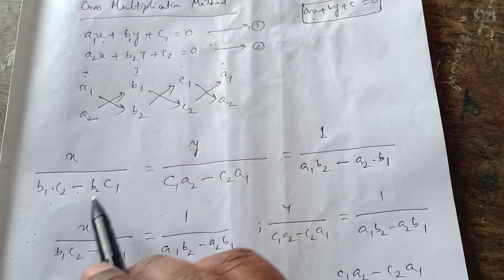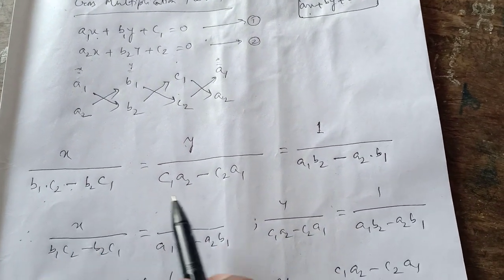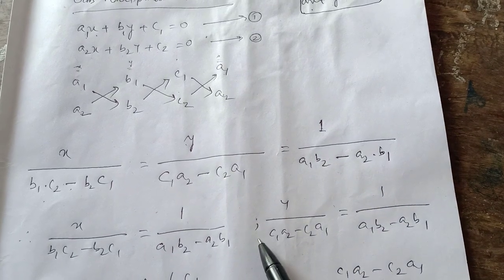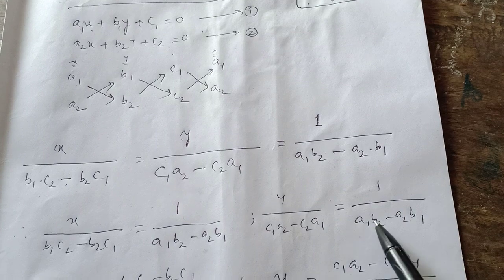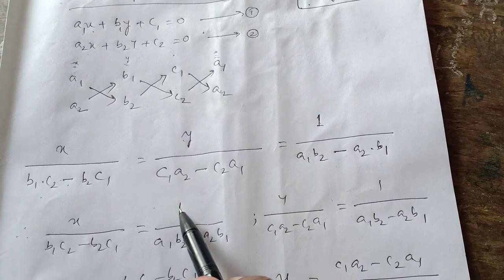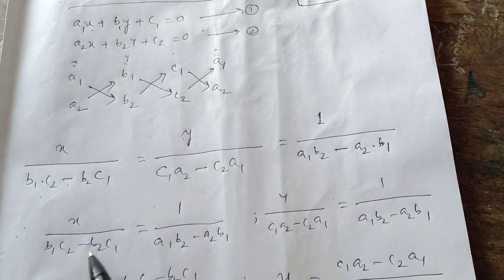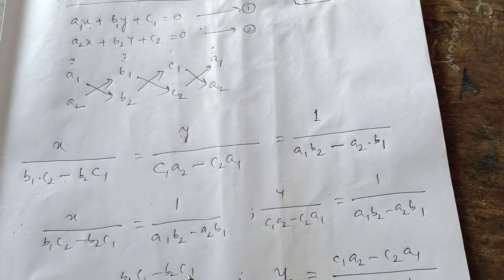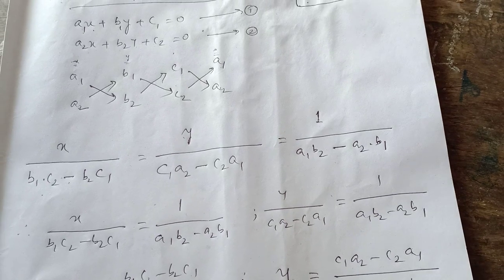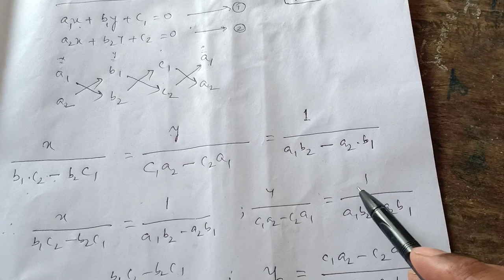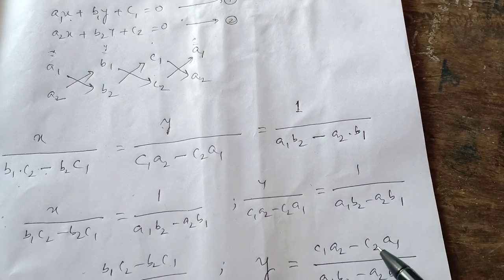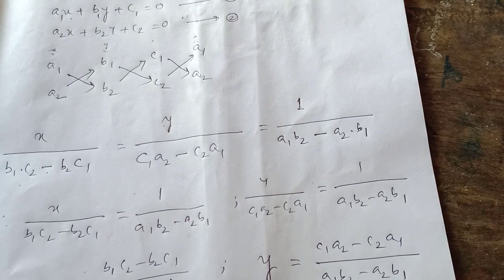After simplifying all these denominators, you equate the first fraction with the last fraction, and the second fraction with the last fraction. By cross multiplication, X equals — the numerator goes up — giving X equal to (B1C2 minus B2C1) divided by (A1B2 minus A2B1). And Y equals (C1A2 minus C2A1) divided by (A1B2 minus A2B1).